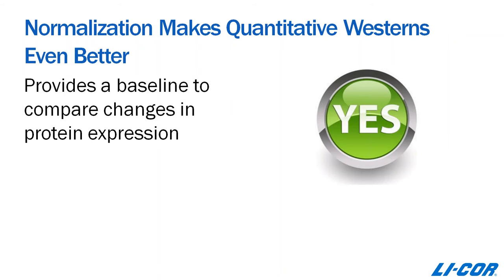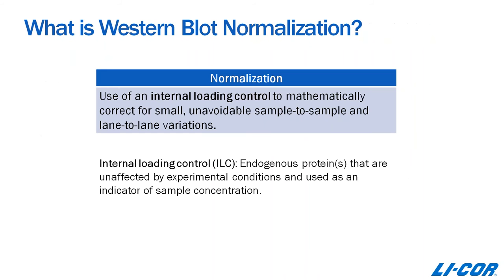What is the definition of Western blot normalization? It's the use of an internal loading control to mathematically correct for small, unavoidable sample-to-sample and lane-to-lane variations. It's not possible to load exactly the same amount of protein from each sample, and even if it were, transfer efficiency from the gel to the blot would be different for each lane. Accuracy in quantitative immunoblotting really relies on appropriate normalization and minimizing error at each step of the process.